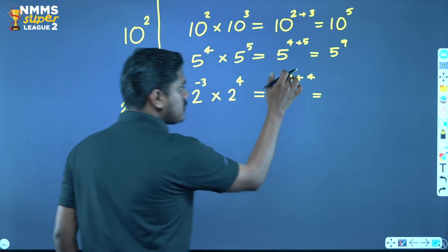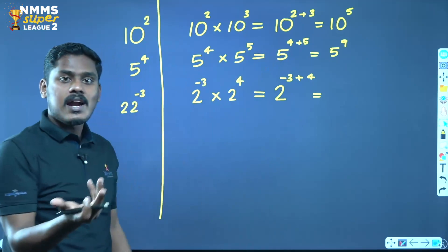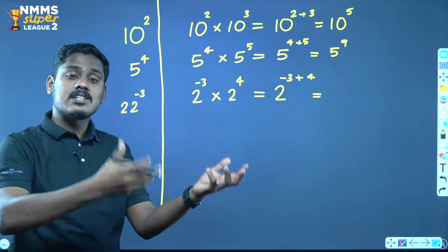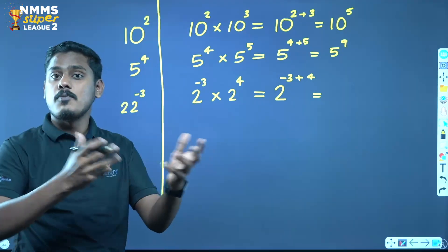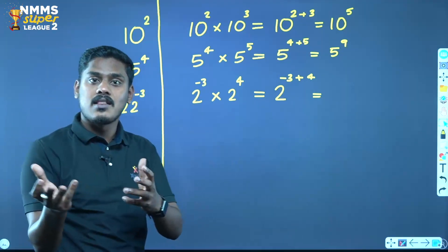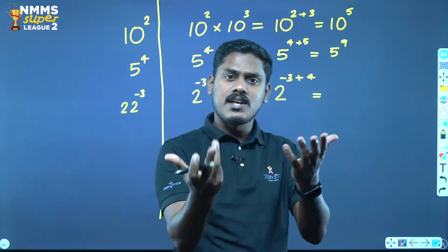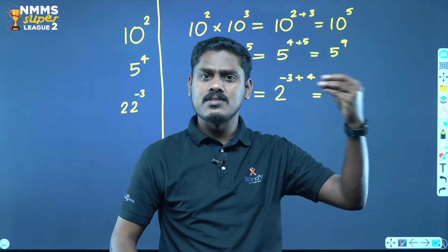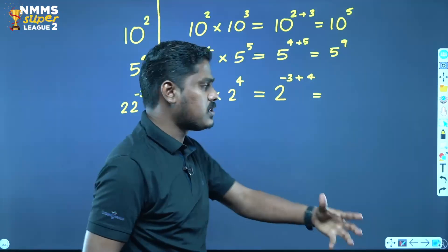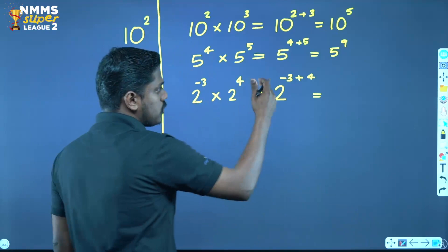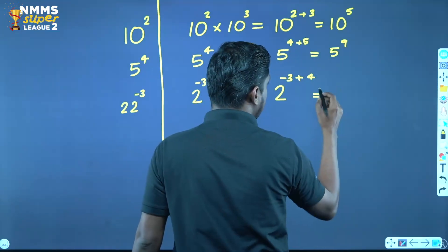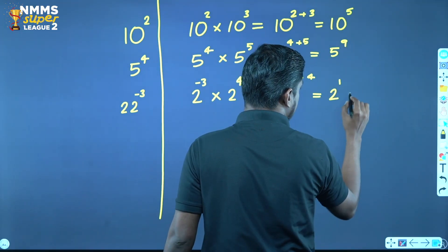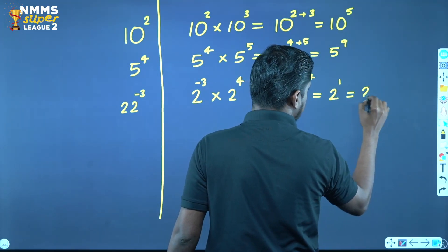It is equal to 2 raised to minus 3 into 2 raised to 4. 2 raised to minus 3 plus 4 is equal to 2 raised to 1.